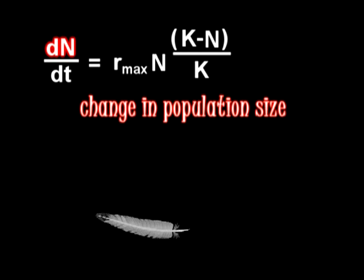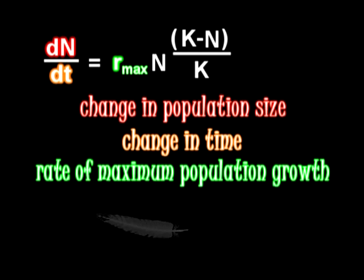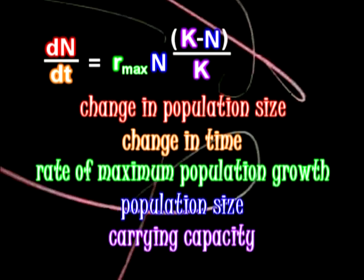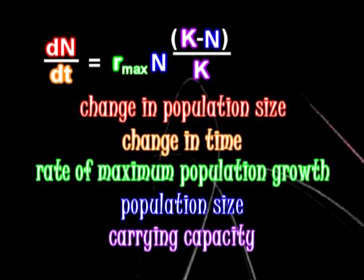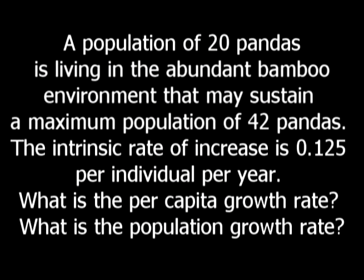What each variable stands for is color coded below. In the following example, we will ignore the left side of the equal sign. The numbers chosen are random so they may not be reasonable. This particular problem only concerns the right side of the equal sign.